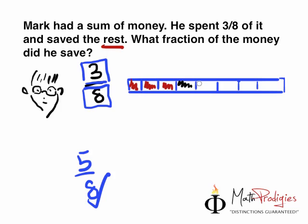So how many parts? Let's count with me. 1, 2, 3, 4, 5. So the total number of parts that he saved was 5. And 5 out of what? 5 over what? 5 over 8. Good job. You are a math prodigy.